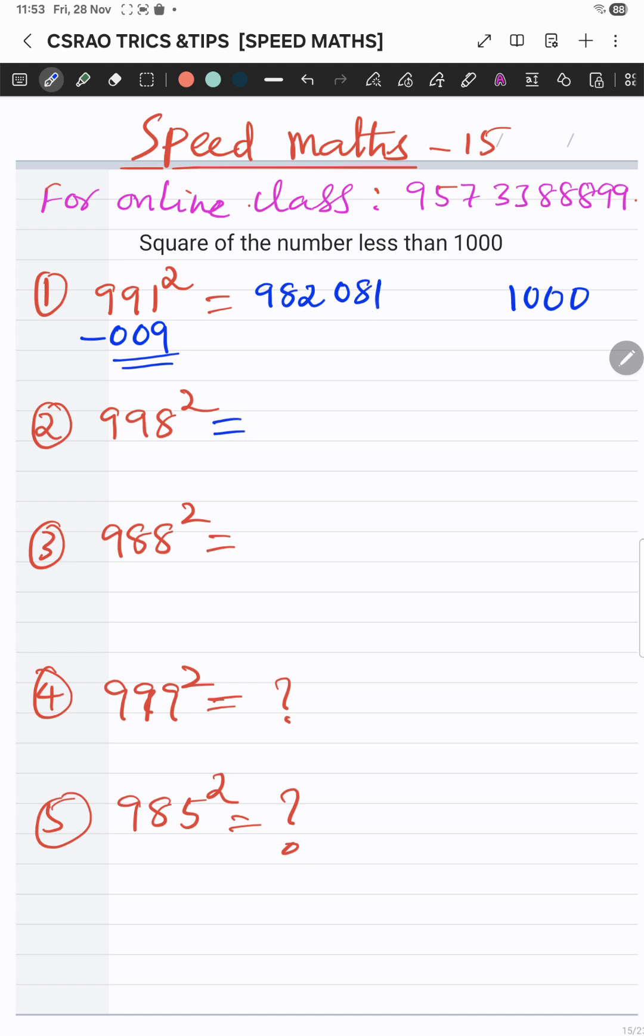Square of 998. Now it is 002, you have to subtract. It is less than two, you have to subtract. Now we have to subtract, 996. Right? Now square of the 002 is 004.